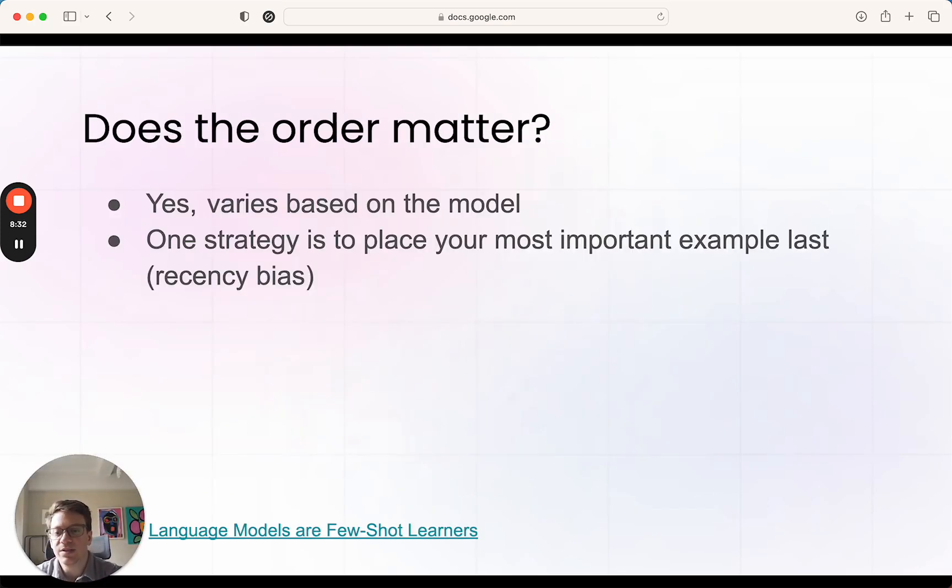Does the order of the examples matter? Again, this is all very model-specific. As we touched on in a recent post of ours, each model has really specific requirements for prompts and how it handles prompts and inputs and outputs. But it does—it varies. One strategy is, if you have a really good example or the best example, for example thinking about the content generation prompt, you could have that come last, just because the models are known to put a little bit of extra emphasis or bias to the last text that they read.